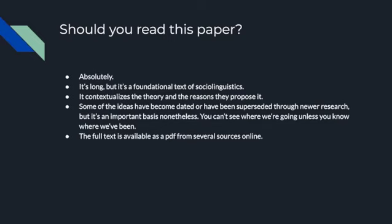Should you read this paper? Absolutely. Will you understand it if you're not a linguist? Maybe, maybe not. It's a very long paper — 100 pages, but half-sized pages, so closer to 50 full-sized pages. It is basically the foundational text of sociolinguistics. It contextualizes the theory and the reasons they propose it. It is written in mid-1960s academic style — very dense, very much liking to show off fancy word structures. Some of the ideas have become dated or been superseded by newer research, but it's an important basis nonetheless. It was published over 60 years ago, and obviously in 60 years something new is going to happen — chemistry was very different then too.